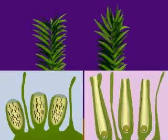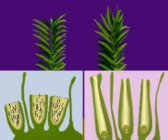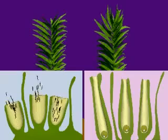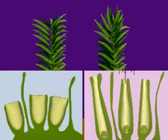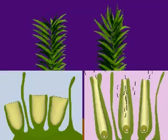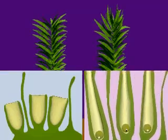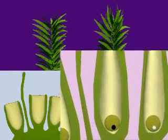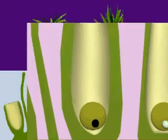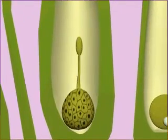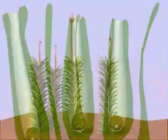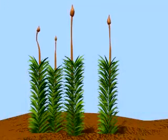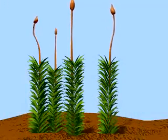Sperm are released from the antheridium and swim to the archegonium. Fertilization takes place inside the archegonium and a zygote is formed. The zygote divides by mitosis to form a new sporophyte in the form of a stalk and capsule.